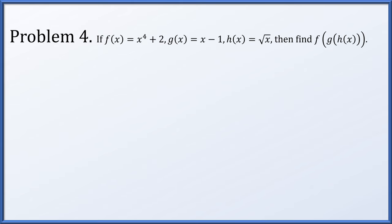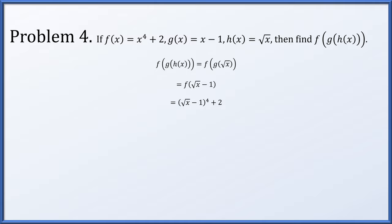Problem 4: if f(x) = x⁴ + 2, g(x) = x - 1, and h(x) = √x, what is f(g(h(x)))? All we have to do is go through one step at a time. h(x) = √x, so g(√x) = √x - 1, and now plugging into f gives (√x - 1)⁴ + 2.